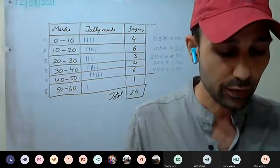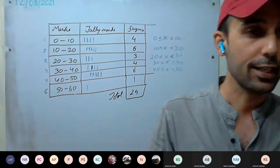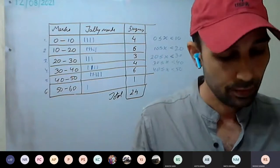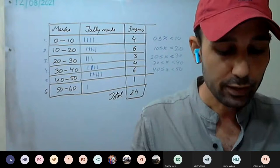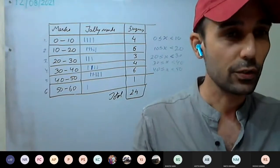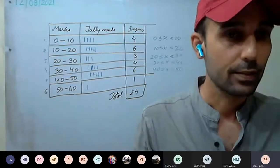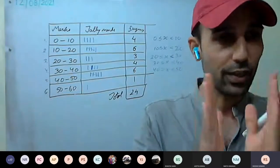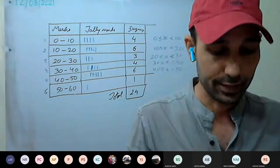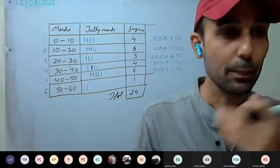Fourth question: a quantity which can vary from one individual to another is called a variable — like height varying is called a variable. Sizes of shoes are discrete variable values because we cannot find shoe sizes between two sizes.